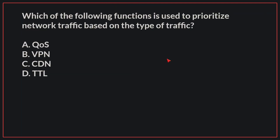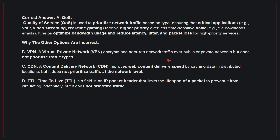Which of the following functions is used to prioritize network traffic based on the type of traffic? The correct answer is A, QoS. Quality of Service is used to prioritize network traffic based on type, ensuring that critical applications receive higher priority over less time-sensitive traffic. It helps optimize bandwidth usage and reduce latency, jitter, and packet loss for high-priority services. Why the other options are incorrect? B, VPN: a virtual private network encrypts and secures network traffic over public and private networks, but does not prioritize traffic types. C, CDN: a content delivery network improves web content delivery speed by caching data in distributed locations, but does not prioritize traffic at the network level. D, TTL: time-to-live is a field in an IP packet header that limits the lifespan of a packet to prevent it from circulating indefinitely, but does not prioritize traffic. Therefore, the correct answer is A, QoS.